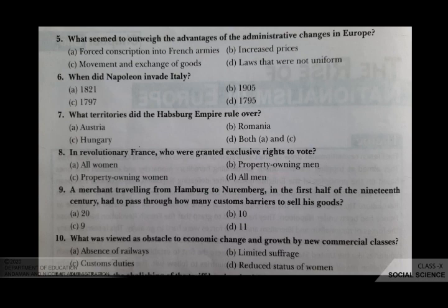The next question is: when did Napoleon invade Italy? Your options are A 1821, B 1905, C 1797, D 1795. The correct answer is C, 1797.